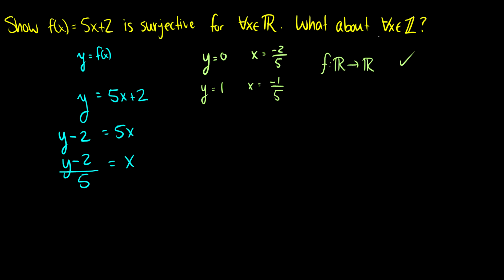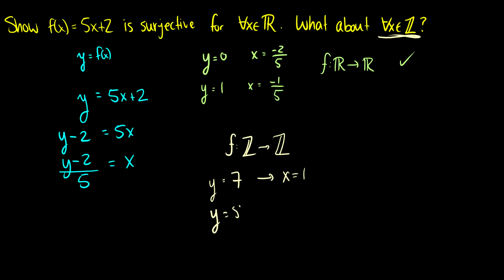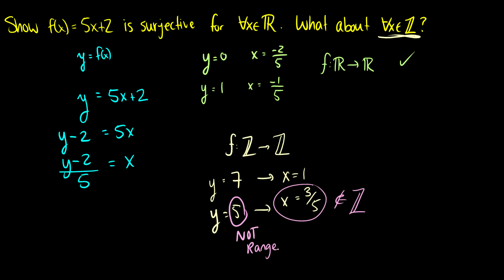But what about if we map f from the integers to the integers? We've seen that if y = 7, then x = 1, so we can get 7. But can we get y = 5? If y = 5, then x = 3/5. But 3/5 is not in the integers. So we can't get y = 5 from the set of integers, which means y = 5 is not in the range. If it's not in the range, then it can't be a surjective function. So this function is surjective depending on which set of numbers we're mapping to and from.